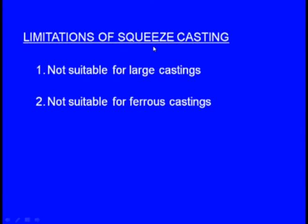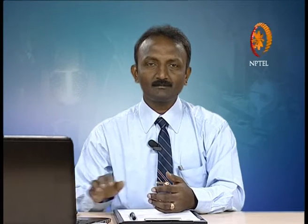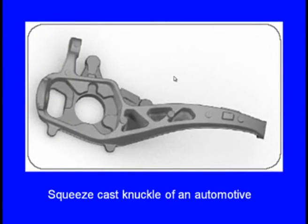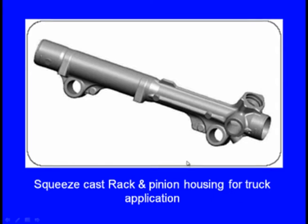The limitations of the squeeze casting process: not suitable for large castings because the moulds are made up of special metallic dies. Not suitable for ferrous castings because the metallic dies are made up of ferrous alloys, so it can be used only for non-ferrous castings. Typical components include a squeeze cast knuckle for an automotive and a squeeze cast rack and pinion housing for truck applications.